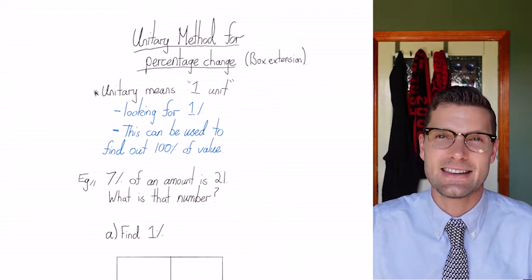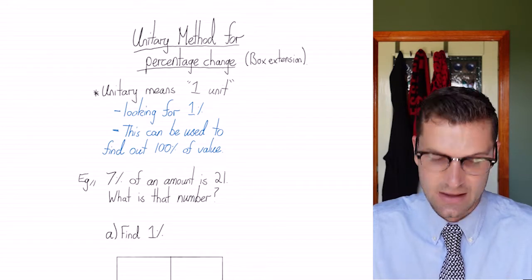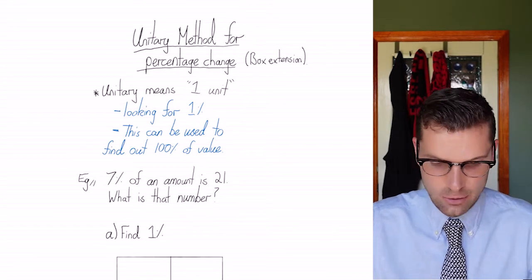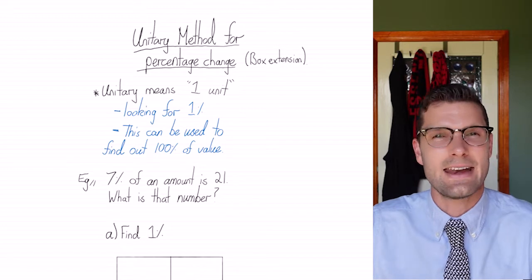I think it's easiest to see this in an example. So, seven percent of a number is equal to 21. What is that number?